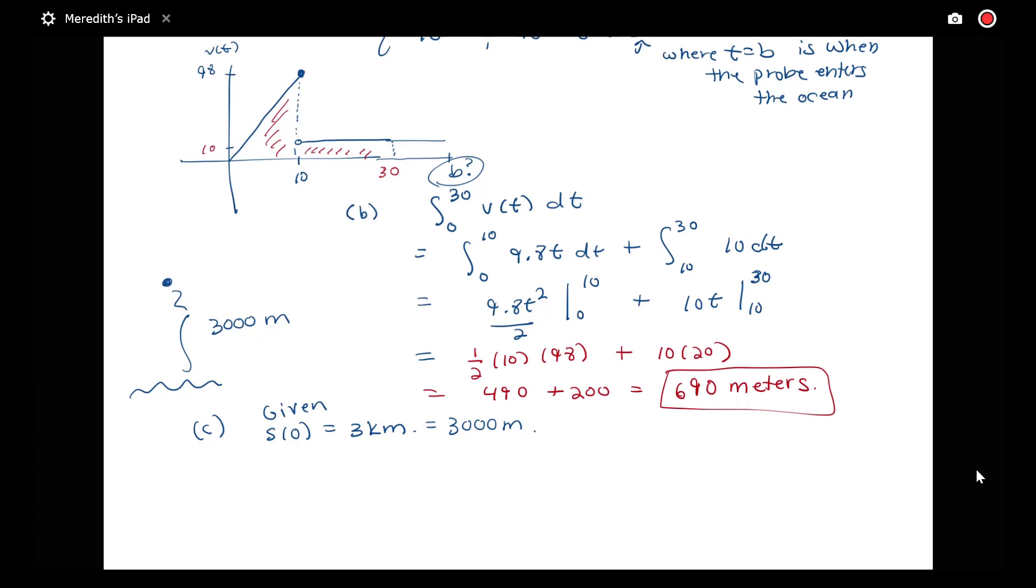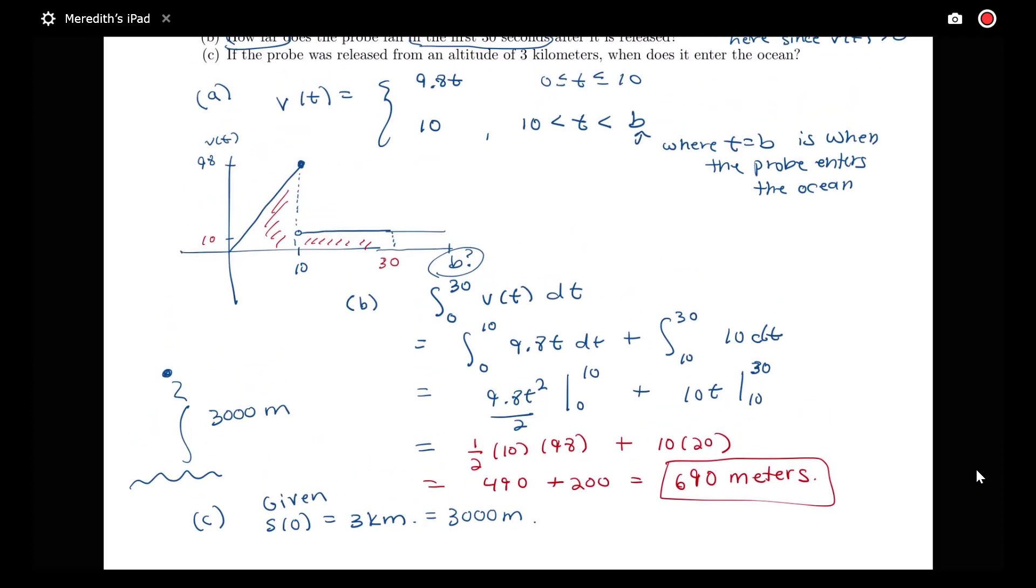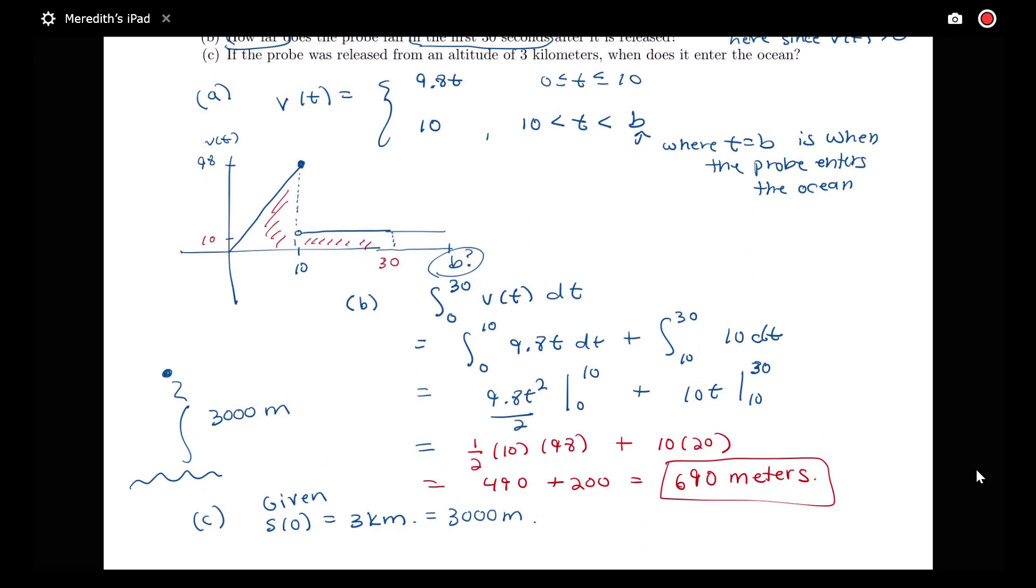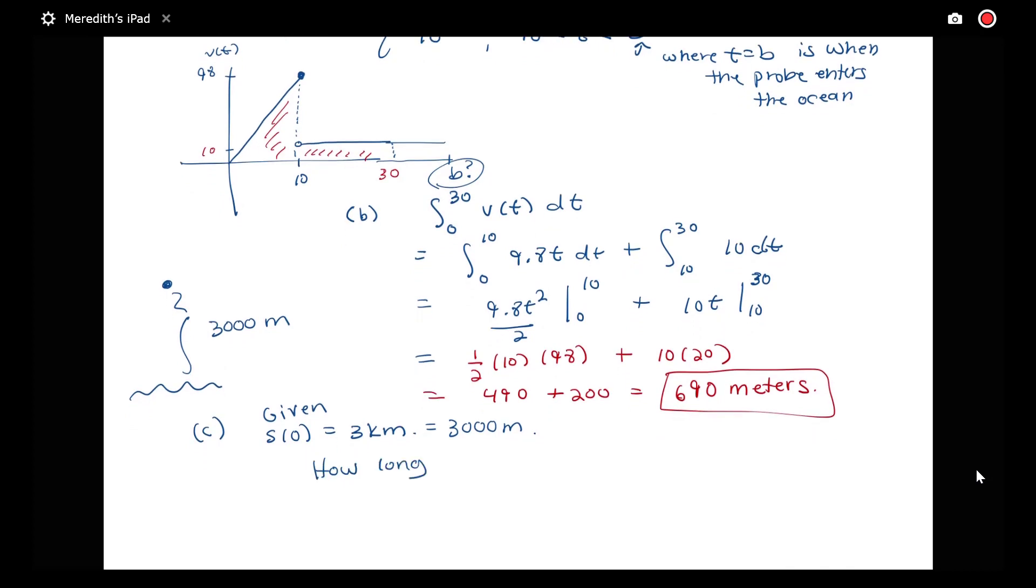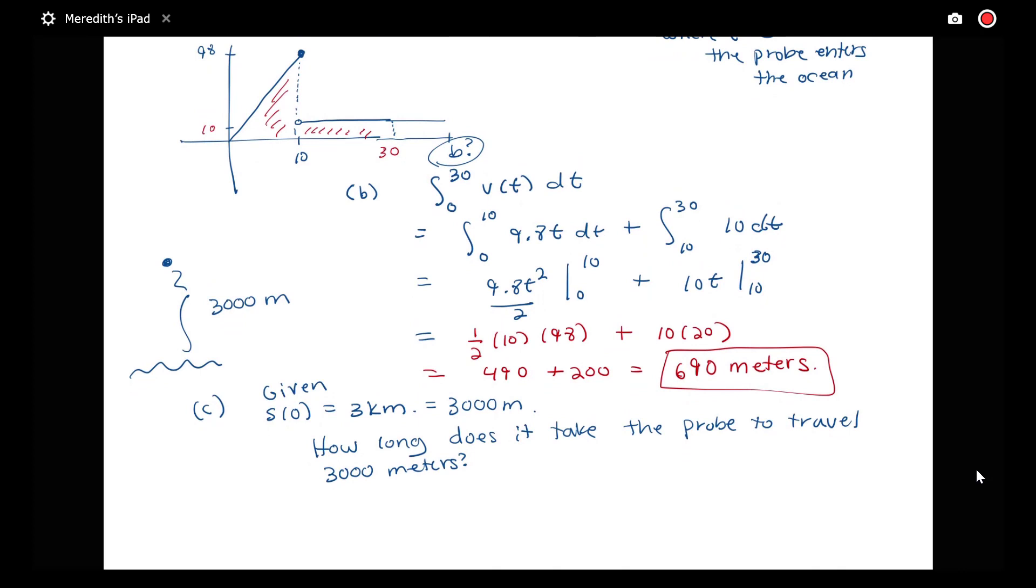So we know that over the time interval from 0 to B, our probe must be traveling 3,000 meters here. So to rephrase this question about if it was released from this altitude of 3 kilometers, when does it enter the ocean, we want to know how long does it take the probe to travel 3,000 meters. So in this case, instead of trying to solve for a distance, we have a distance and we're trying to solve for a time.